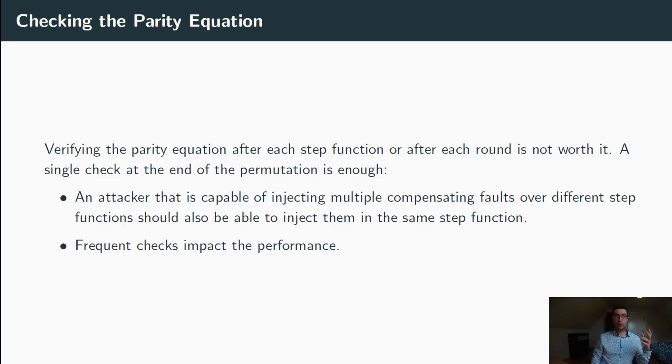I would even argue that checking the parity equation more than once at the very end of the permutation is not really worth it. It has a cost in terms of performance, but it does not bring much in terms of additional fault detection capabilities. Indeed, the only reason why you would want to check the parity equation more often would be to detect, for example, multiple compensating faults over different step functions. But in our opinion, if an attacker is able to pull that off, he would also be able to inject multiple compensating faults in the same step function, for example, which would not be detected anyway.